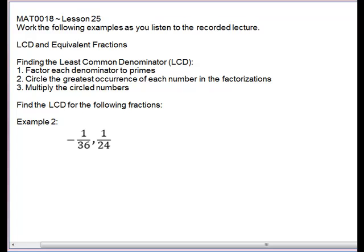Example 2, we're going to find the least common denominator for 36 and 24. These are pretty big, so I'm going to do this on the side. For 36, we could do 6 times 6, and 2 and 3, and 2 and 3. So 36 is equal to 2 times 2 times 3 times 3.